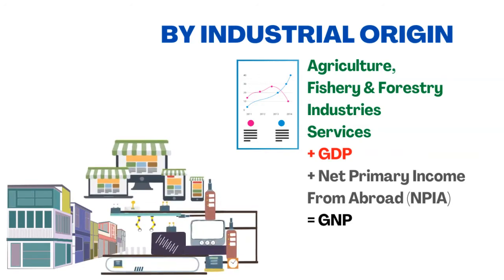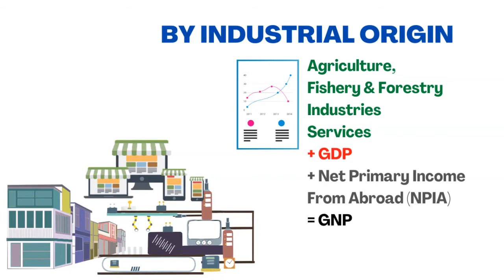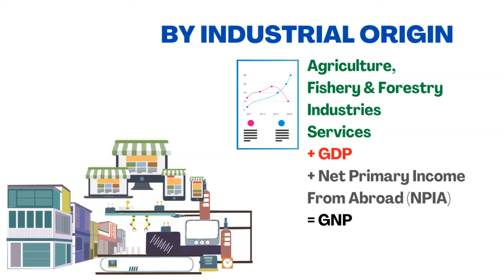One approach to measuring GNP is by industrial origin. It adds agriculture, fishery, and forestry, industries, services, GDP, and net primary income from abroad to the GNP equation.